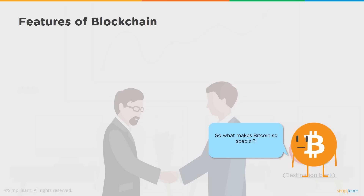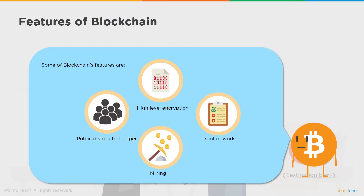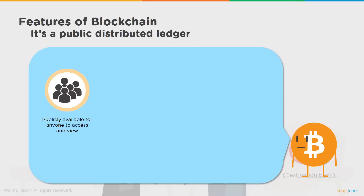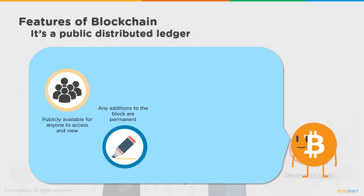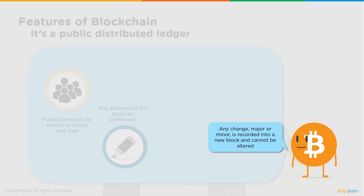What makes Bitcoin so special? These are the primary features of blockchain. It's a publicly distributed ledger — everyone has access to all records from the time the blockchain was created. The first block in the blockchain is called the genesis block. Any additions to the block are permanent and immutable. Any change, major or minor, is recorded into a new block and cannot be altered — this is the primary immutability feature of blockchain.